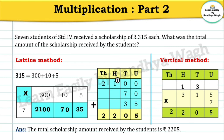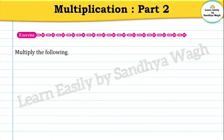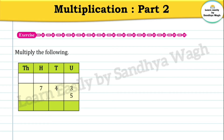The total scholarship amount received by the students is 2205. Now let us solve the exercise on page number 75. Multiply the following: 743 multiplied by 5. Units place: five 3s are 15, write 5 and carry 1. Tens place: five 4s are 20, plus 1 is 21, write 1 and carry 2. Hundreds place: five 7s are 35, plus 2 is 37, write 7 and carry 3. Final answer: 3715.